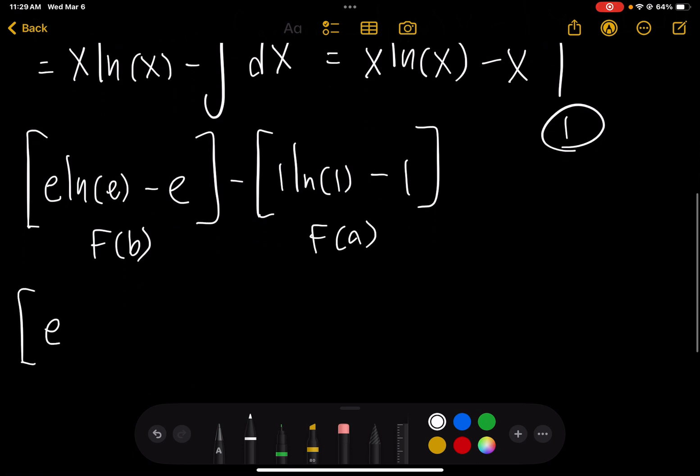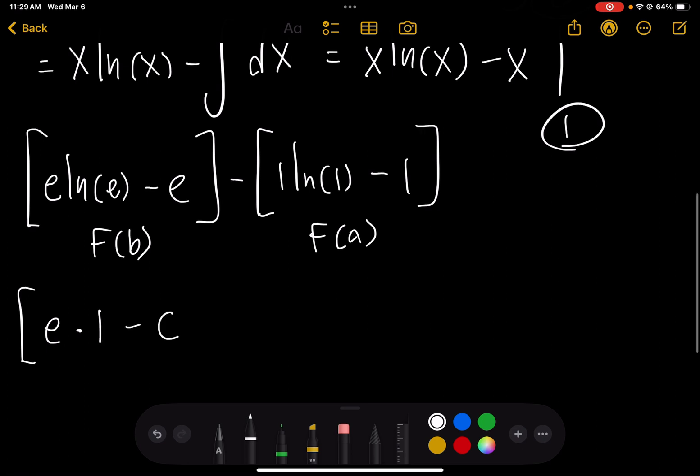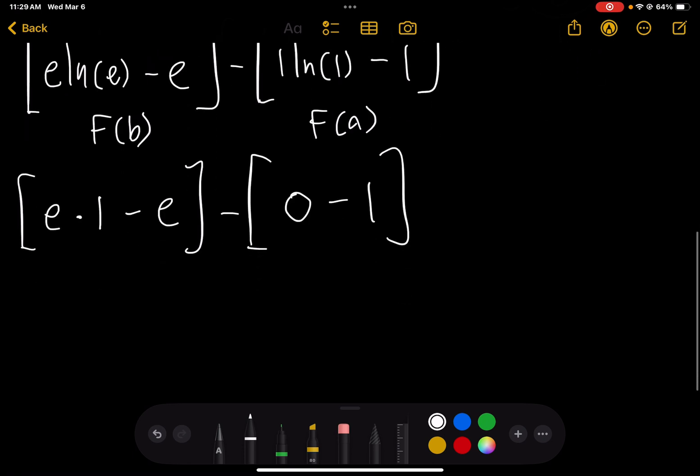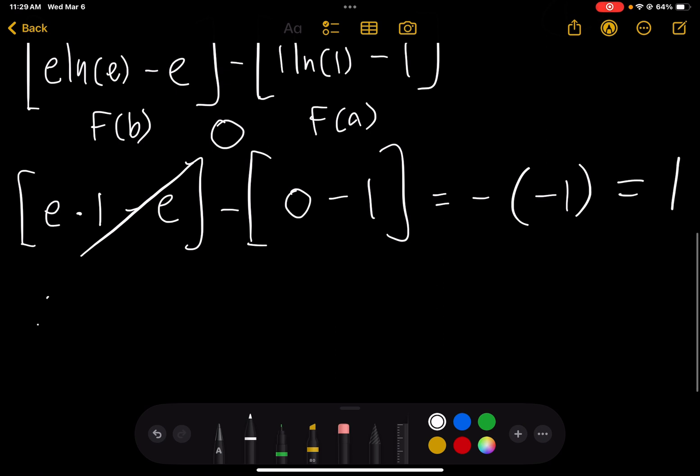So the natural log of e is 1 minus e. The natural log of 1 is 0. And as you can notice, this goes to 0. That's negative times negative 1, which is 1.